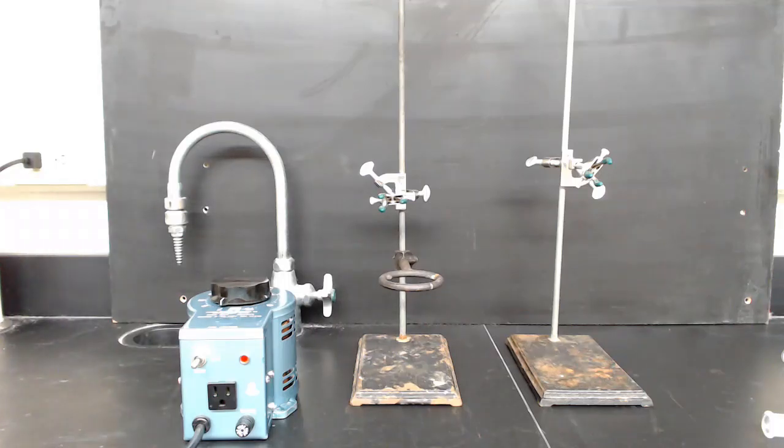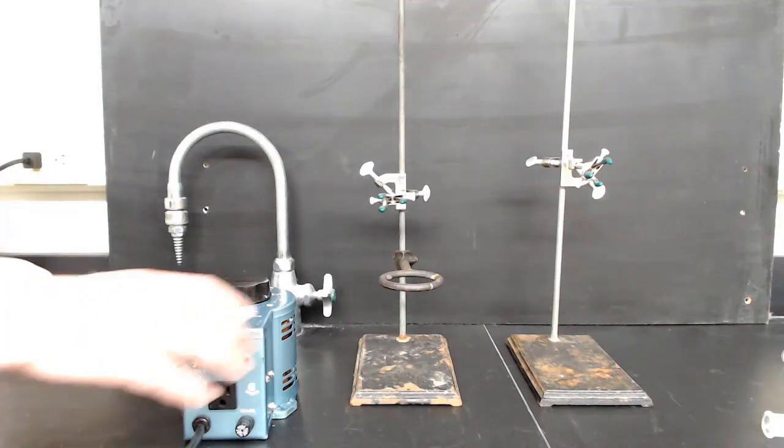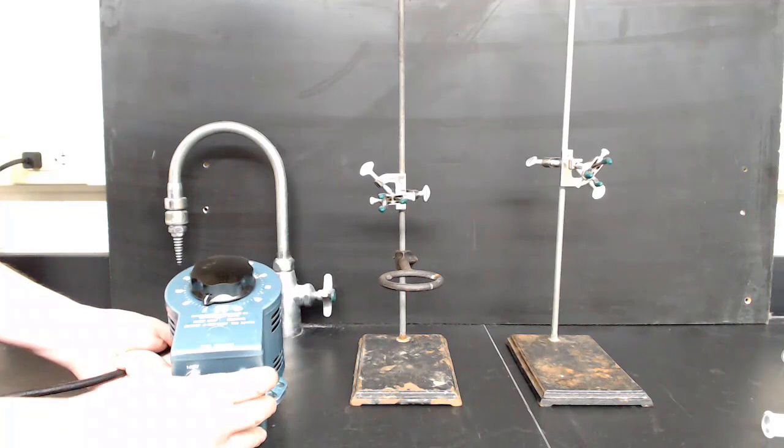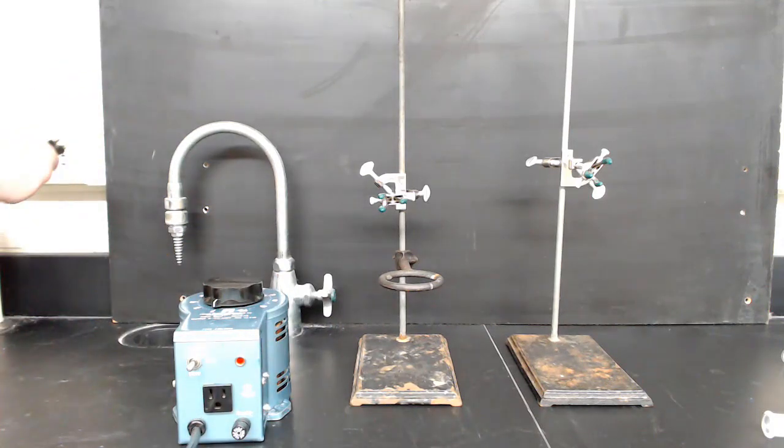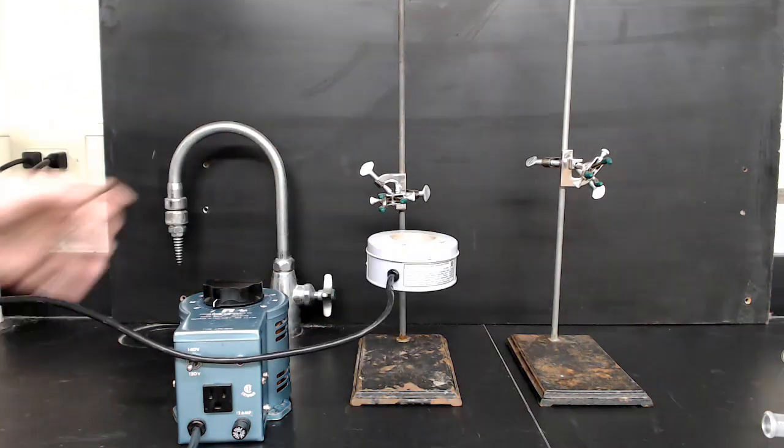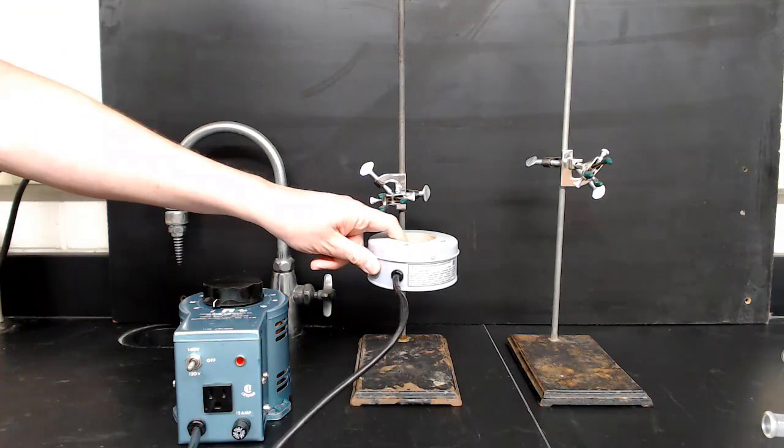Start off the experiment with two ring stands and a ring. Then, get a variable transformer like this, which has a dial that can adjust the temperature, plug it into the 120-volt wall current, get a heating mantle, and plug that heating mantle into the variable transformer.